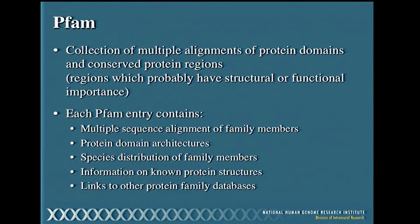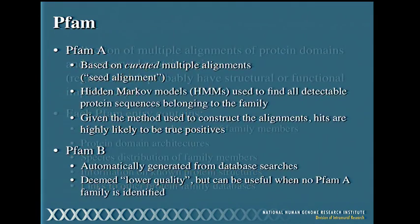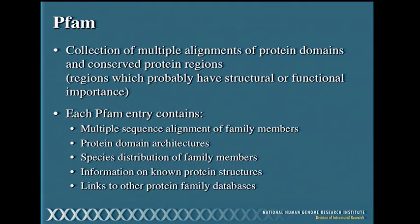The first web resource we're going to consider is called PFAM, which stands for protein families. It's a collection of multiple sequence alignments representing either protein domains or conserved protein regions. Because these are conserved, they have structural or functional importance. When we look at entries, you'll see the actual alignment used to create the profile, information on domain architecture—the collection of domains in a row characterizing a particular family—which species these proteins are found in, solved protein structures if available, and links to other resources.